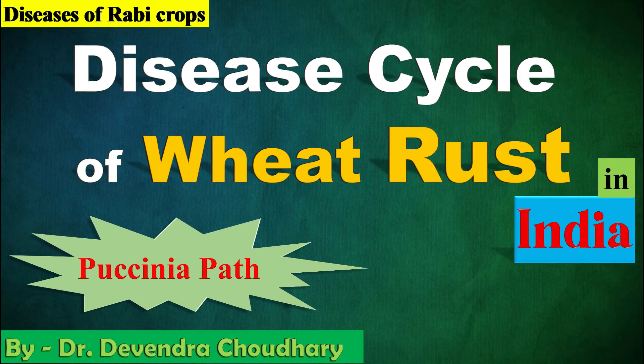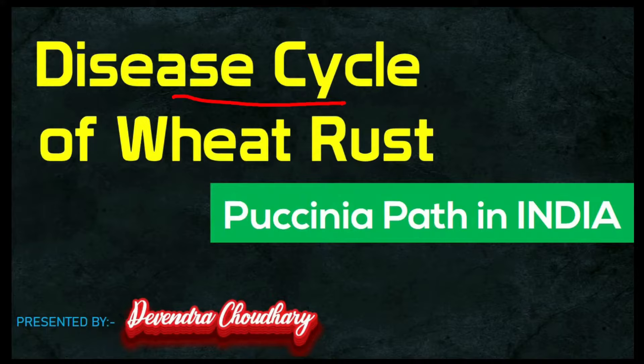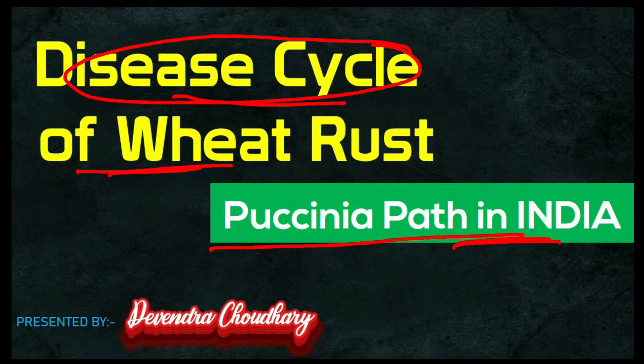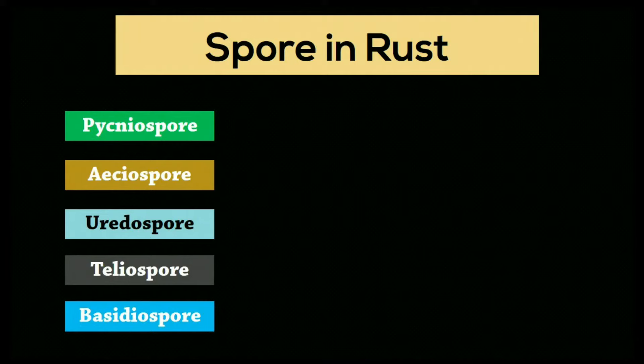Disease cycle of wheat rust and Puccinia pathway in India. The disease cycle of Puccinia is also called the Puccinia path. Puccinia produces five types of spores.